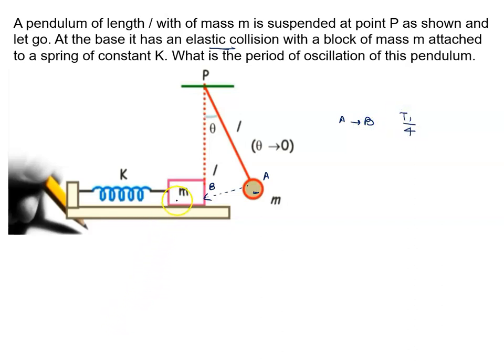Now this spring block system, this block goes from here to here. And then it comes back here. When it comes, the bob at rest goes into motion.